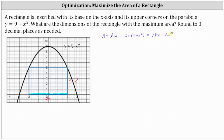Because we're trying to maximize the area, we need to find the critical numbers of A by determining where the first derivative is equal to zero or undefined. So A prime equals the derivative of 18x minus 2x cubed, which is 18 minus 6x squared. There are no values of x where A prime is undefined, so to find the critical numbers, we set A prime equal to zero and solve.